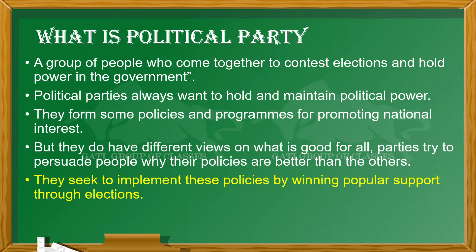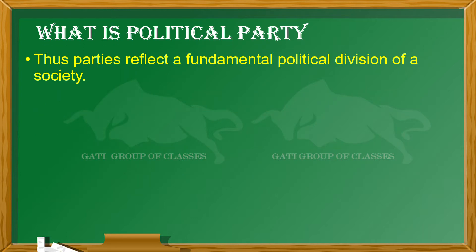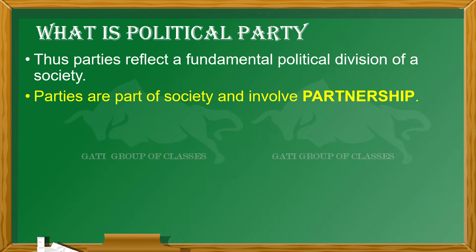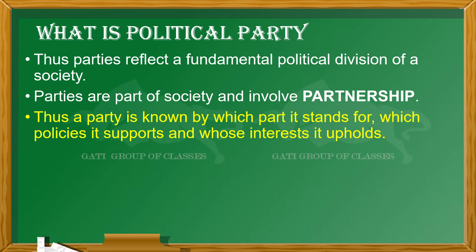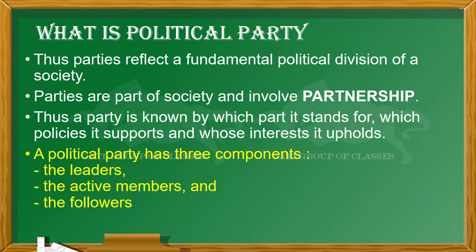Every party has a fundamental political division of society because they are part of our society. Every party has their own identity, their own ideals, and they support different actions — someone stands for the poor people, someone for the rich, someone for military actions. A political party has three components: the leaders, the active members who participate alongside the leaders, and the followers who vote for them and help win support in the government.